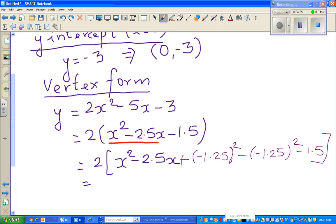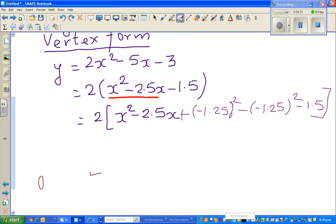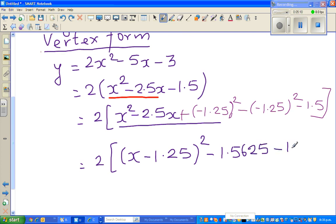So this is equal to 2 bracket. This has become a perfect square of x minus 1.25 squared. Now minus, if you square minus 1.25, we'll check that on a calculator. That would be minus 1.5625. And then you've got a minus 1.5 sitting here. Let us do that on a calculator.